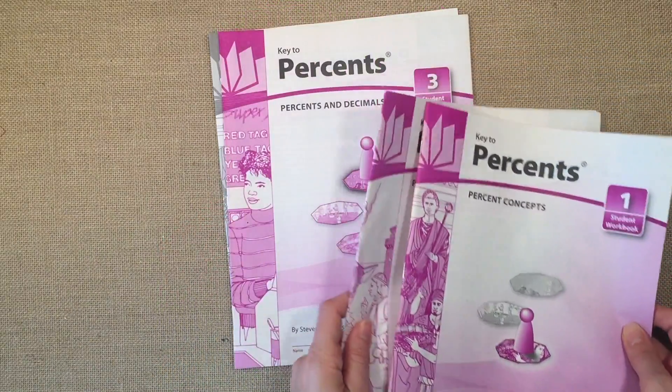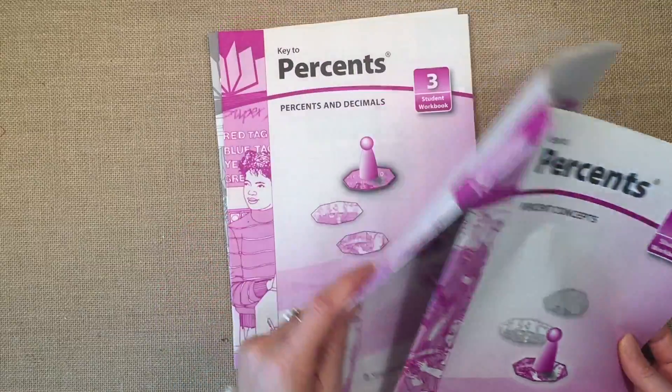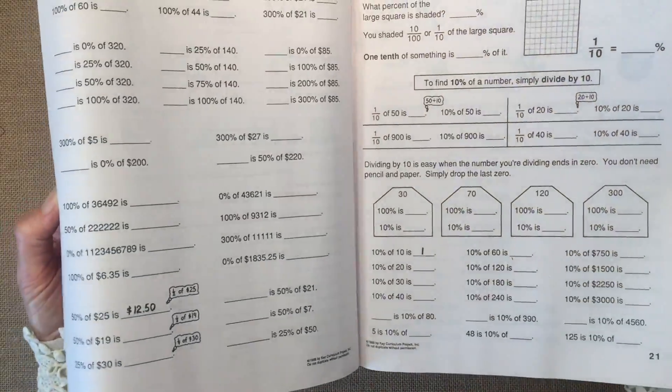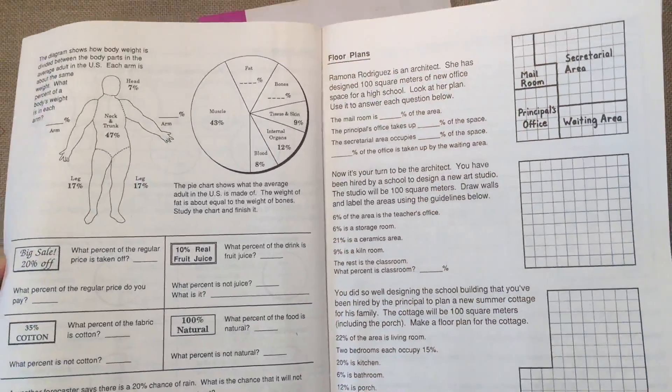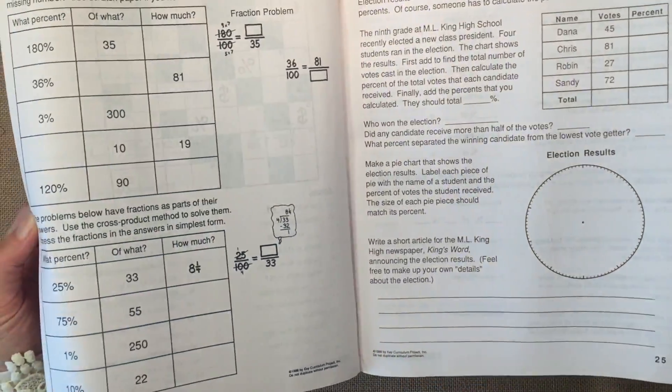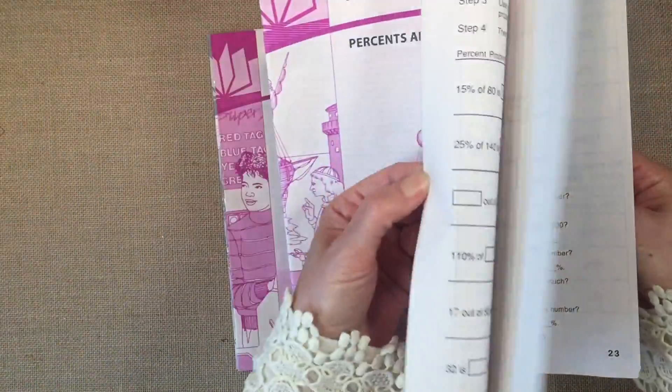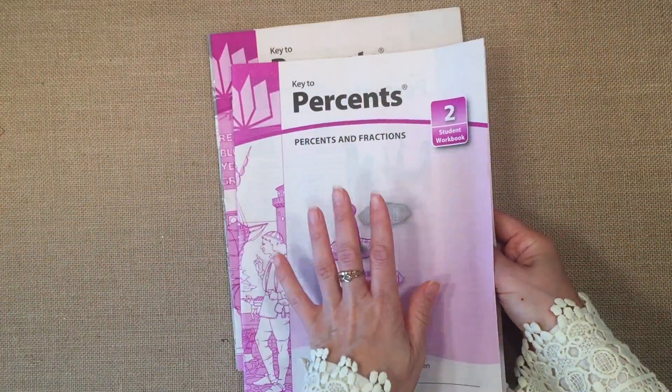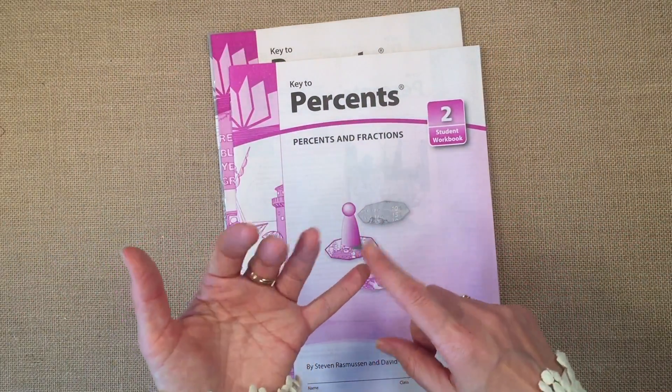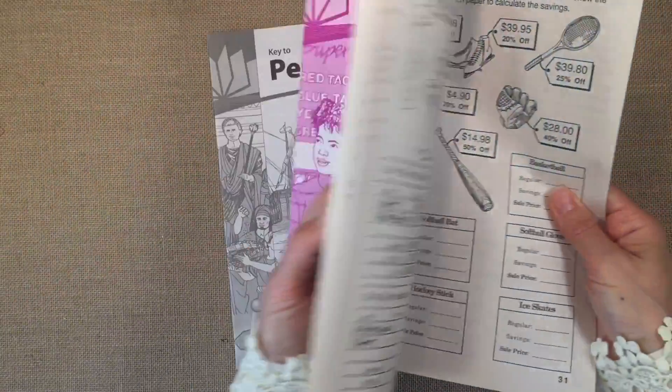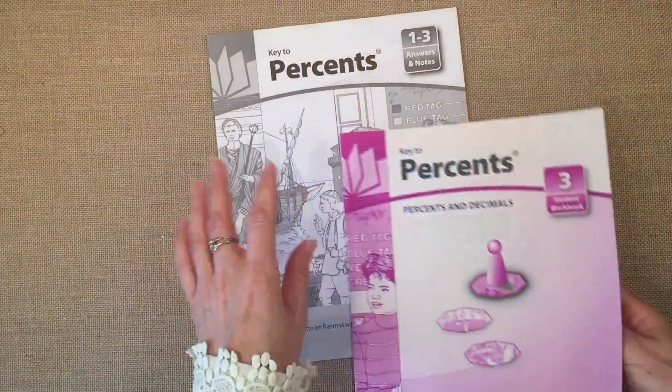The percents have three books. There's percent concepts, percents and fractions, and percents. So this is a really great way to review fractions as part of decimals. So I do fractions first, then decimals, and then percents. And then this is the percents and decimals. And of course it comes with the answer key if you want.